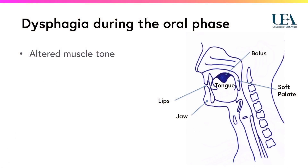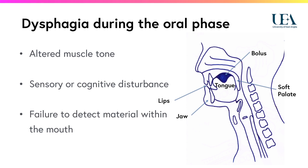Dysphagia during the oral stage or phase of the swallow can result from altered structures or muscle tone affecting the jaw, the lips, the tongue or the soft palate, disrupting retention or preparation of the bolus. Sensory impairments such as following surgery or as a result of stroke or cognitive difficulties may result in failure to detect material within the mouth. Either may result in uncontrolled material entering the pharynx and the open airway.